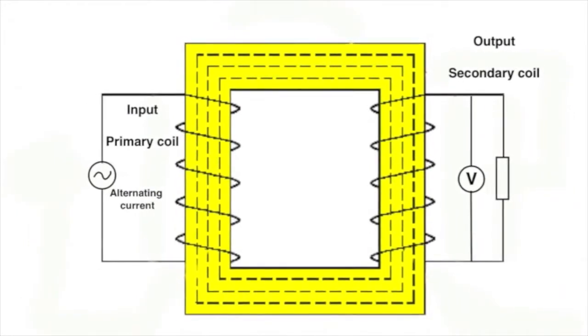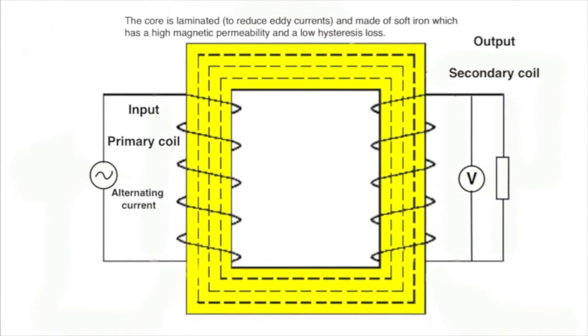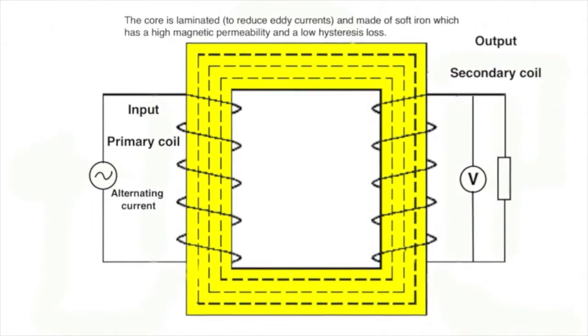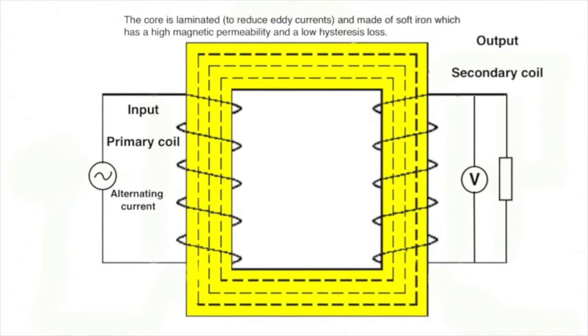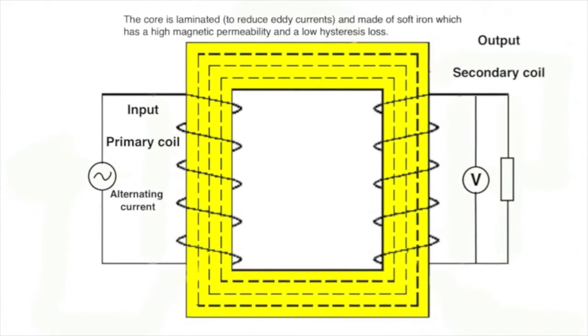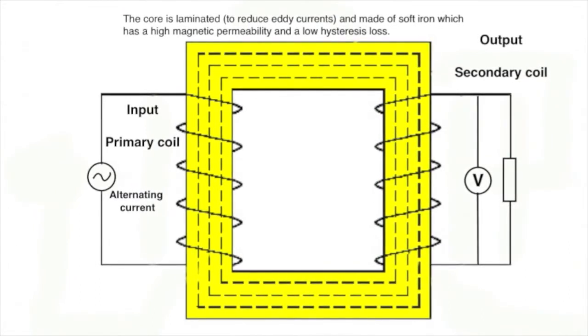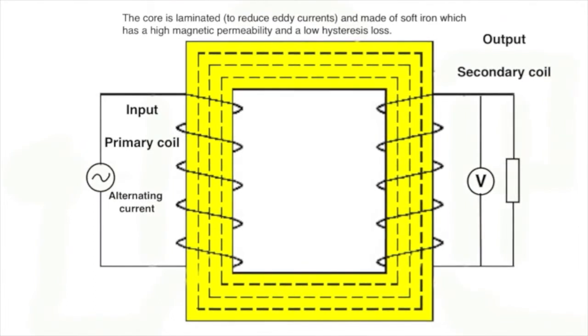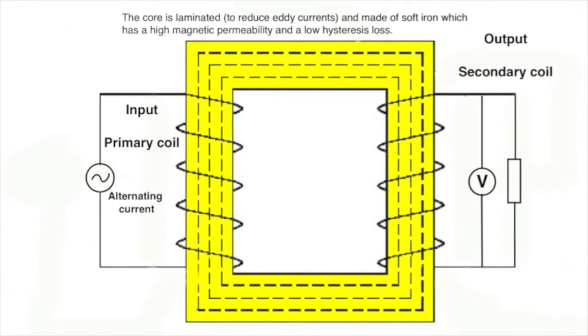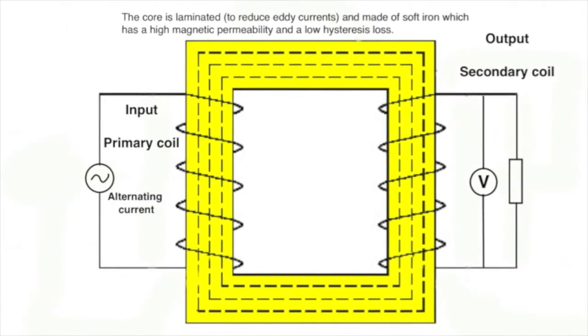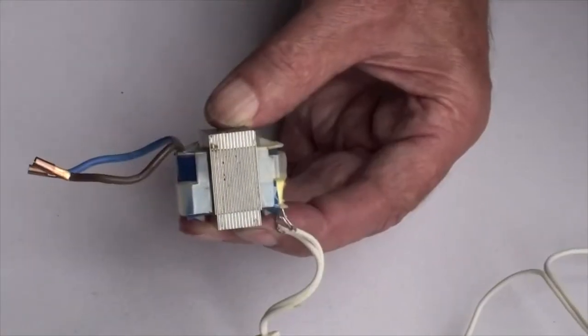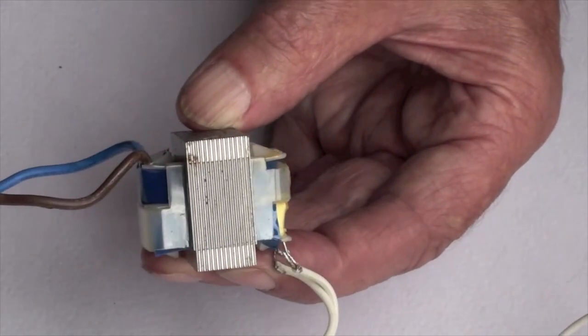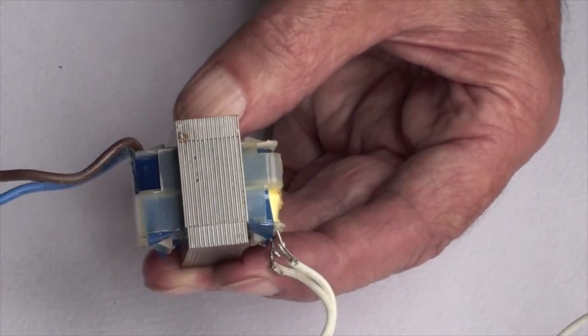The other key design features of a transformer are in the core. It is made of soft iron, which has high magnetic permeability and low hysteresis loss. In other words, it requires very little energy to magnetize and demagnetize it. But this core is laminated, and it's laminated to avoid eddy currents. You can see the laminations quite clearly on this small transformer that we were using before.